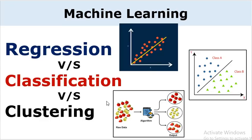Welcome to the Data Future channel. This is Shaker and I am a data scientist. In this session we are going to shed light on three important concepts used in machine learning: regression, classification, and clustering. Most machine learning algorithms are divided into these two or three categories — regression, classification, and clustering — and we will go through them one by one.